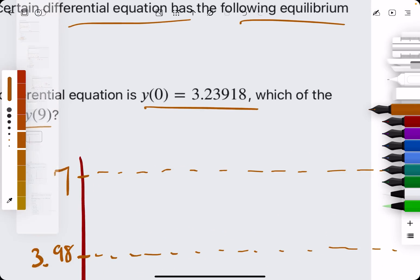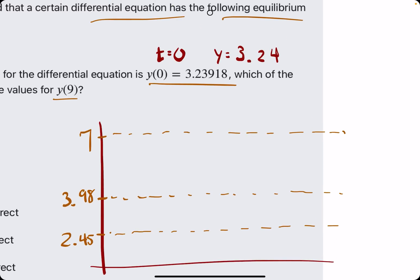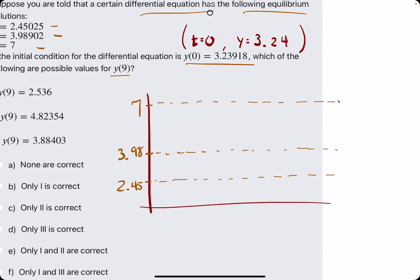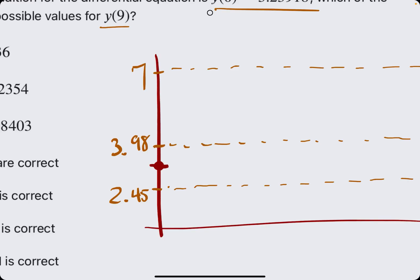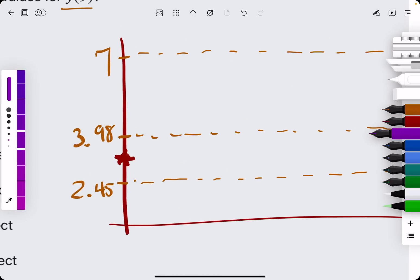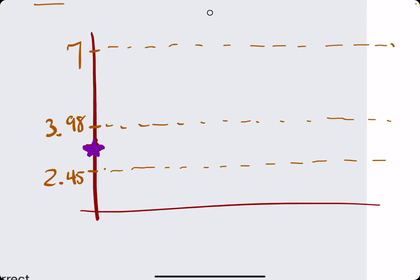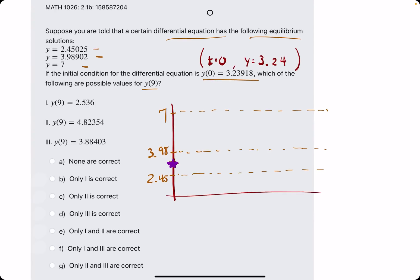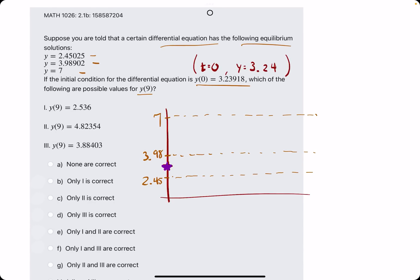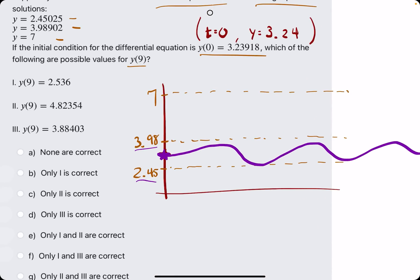And then when we plot this equilibrium solution, this is telling us that at t equals 0, we have a y value of approximately 3, or really 3.24 once we round. So then if we plot that as an ordered pair, 0, 3.24, we're really looking at somewhere in here as the initial point. The main idea is that as we go from left to right, this function can only be bounded between this 2.45 and 3.98. In other words, it could only be between those two values.